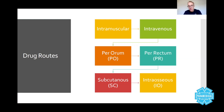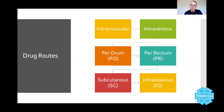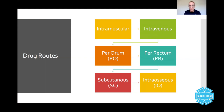Per rectum is a rectal route — the anal cavity has high vascular concentration and lots of circulation, making it a highly effective route. Some ambulance services allow you to use it; a good example is the PR route for benzodiazepines if someone's having a convulsion, while other services say to use intranasal instead. Subcutaneous is underneath the fat — a clear example is insulin for hyperglycaemic patients. However, most ambulance services do not allow paramedics to give it without specific training.